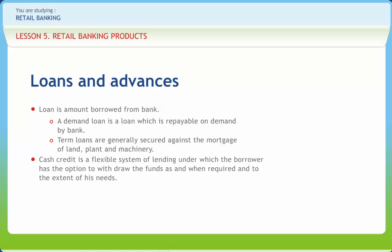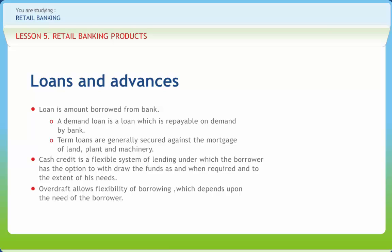Cash credit is a flexible system of lending under which the borrower has the option to withdraw the funds as and when required and to the extent of his needs. Under this arrangement, the banker specifies a limit of the loan for the customer, known as the cash credit limit, up to which the customer is allowed to draw. Overdraft facility is more or less similar to cash credit facility. It is the result of an agreement with the bank by which a current account holder is allowed to draw over and above the credit balance in his or her account, and is generally granted on the basis of a written request by the customer.